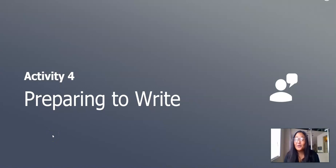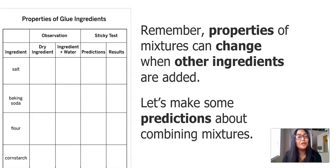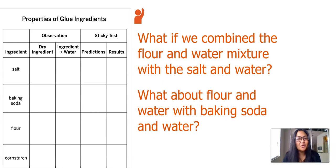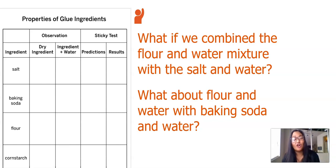In this next part, we're going to get ready to write. I want to remind you that properties of mixtures can change when other ingredients are added. I want us to make some predictions about combining different mixtures. What if we combine the flour and water mixture with the salt and water? The flour and water mixture made a really thick mixture, and the salt and water was not so thick but was grainy. So I think if we combined all of those, it would be thick and grainy — a different texture.